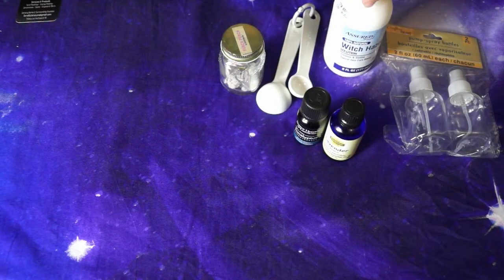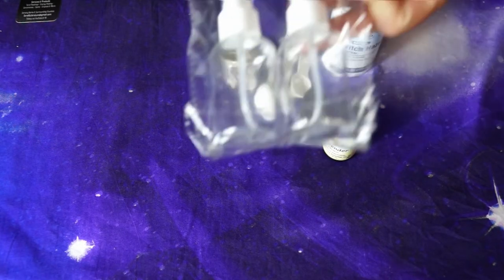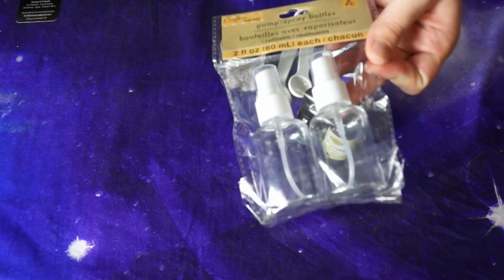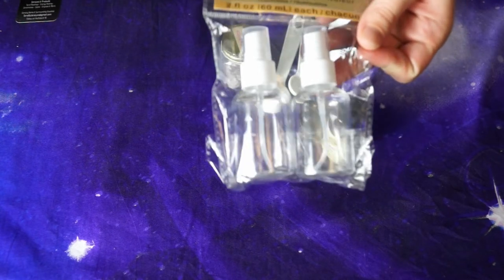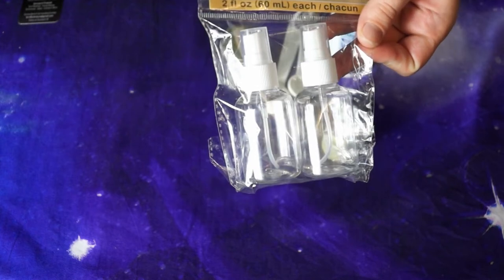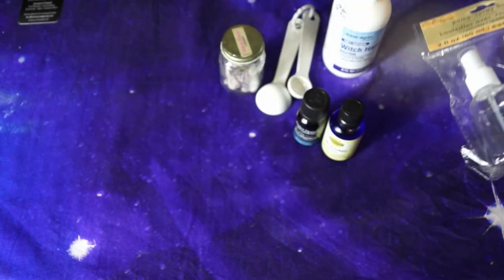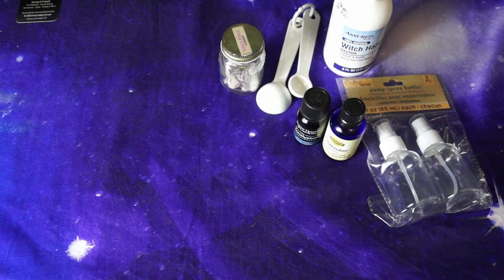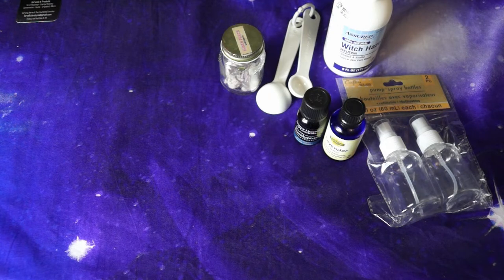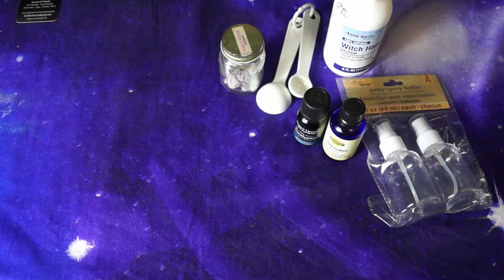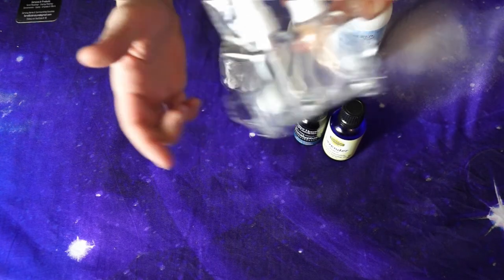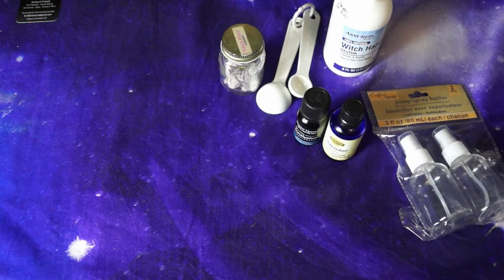This is just a simple little bottle of witch hazel that I picked up at the dollar store, as well as these spray bottles. Today I am using a two ounce spray bottle. I like to use the smaller spray bottles because the oils and water do separate, so making a big bottle is kind of inconvenient. I prefer not filling the two ounce spray bottles all the way.